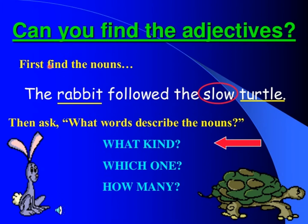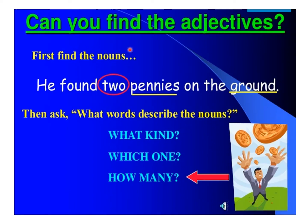Can you find the adjectives? First, find the nouns. The rabbit followed the slow turtle. Here, nouns are turtle and rabbit. The word 'slow' describes the noun turtle — what kind of noun it is? It is a slow turtle. He found two pennies on the ground. What words describe the nouns? How many pennies? Two pennies. It answers the question: how many.